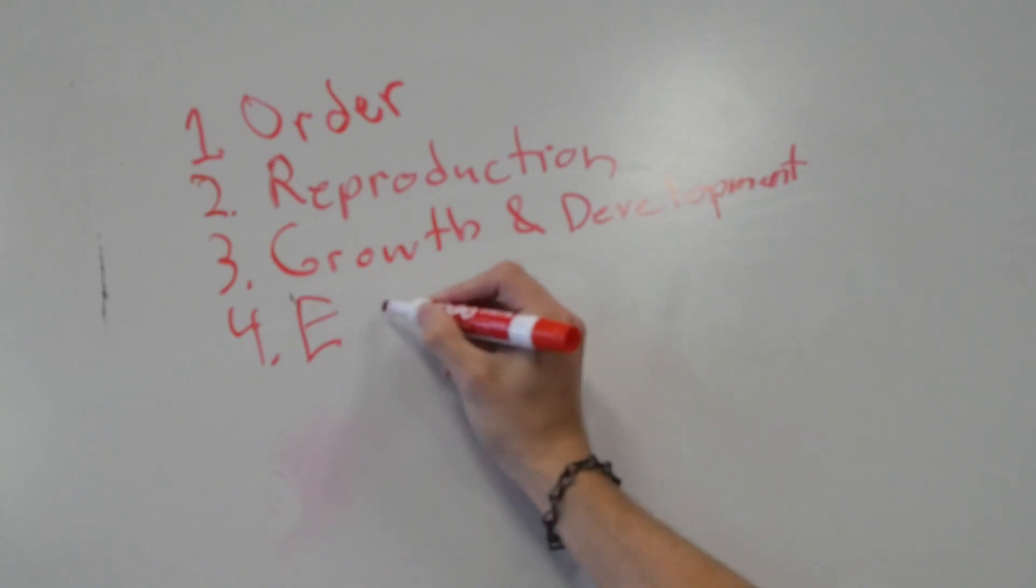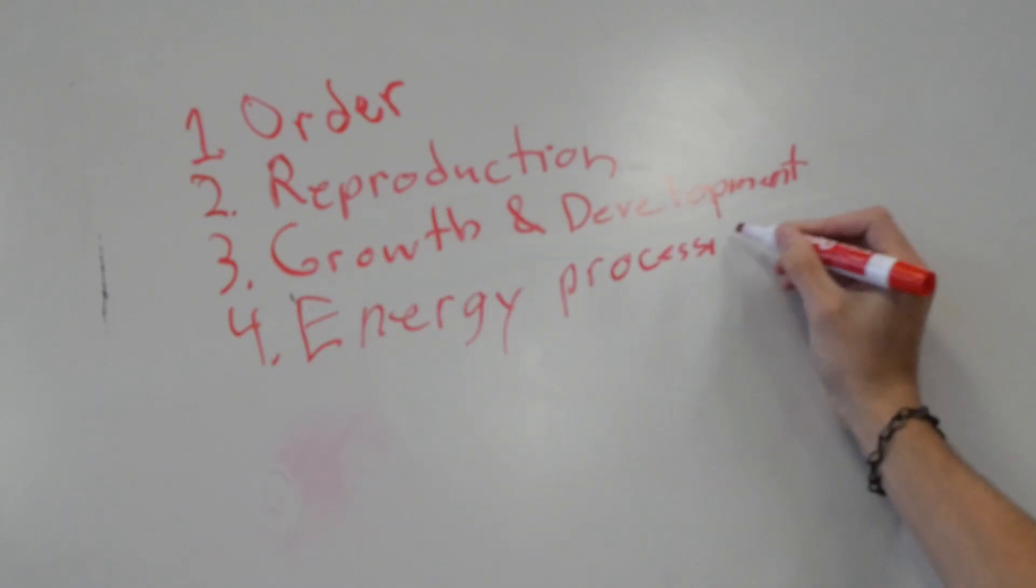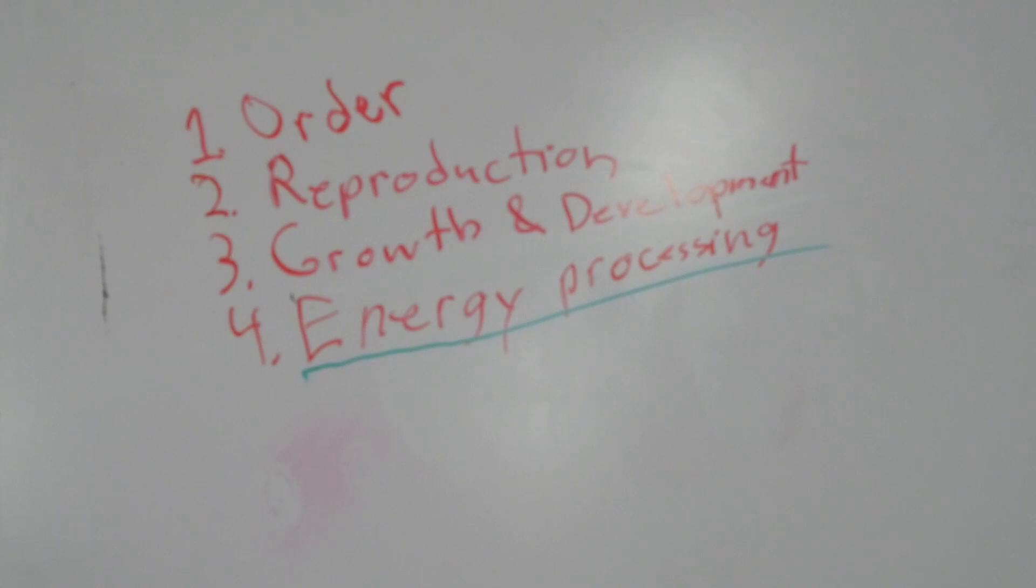The fourth principle is energy processing. This one just comes with being made of cells. Cellular respiration is how individual cells convert oxygen and glucose molecules from food into ATP, the energy currency of life.